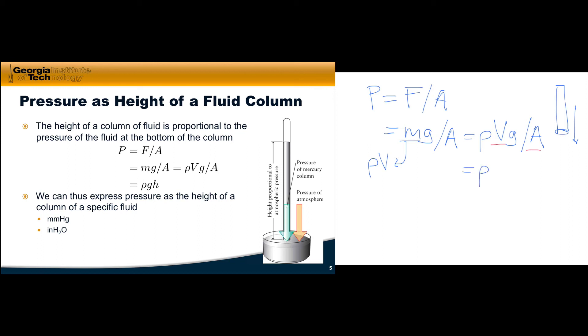ρ and g are simply constants depending on the identity of the particular fluid. We can use as a measure of pressure the height of a column of a particular fluid. Examples are millimeters of mercury and inches of water.